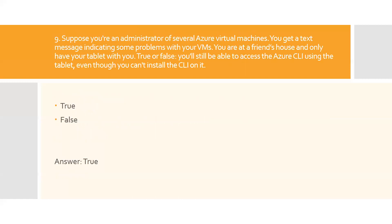Question nine: Suppose you are an administrator of several Azure virtual machines. You get a text message indicating some problems with your virtual machines. You are at a friend's house and only have your tablet with you. True or false — you will still be able to access the Azure CLI using the tablet, even though you can't install the CLI on it? The Azure Cloud Shell is available in the browser and runs with the full Azure CLI. If you prefer PowerShell, the Azure Cloud Shell has that as well. The answer is true.